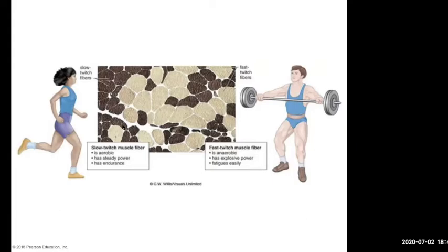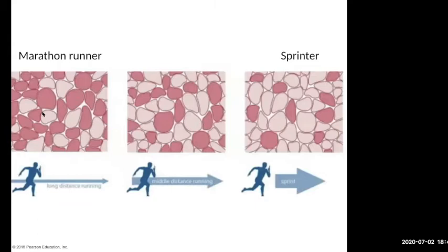The distribution in any given muscle is different — you'll usually have a mix. There's a genetic component to this as well. Some people naturally have more fast or slow twitch fibers, or more intermediate. Marathon runners have a lot of smaller slow-twitch fibers, whereas a sprinter or a weightlifter might have more fast-twitch large fibers.